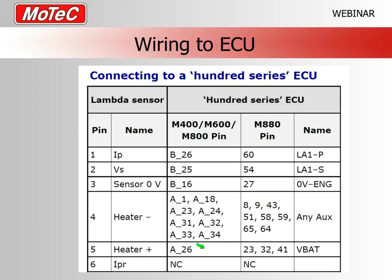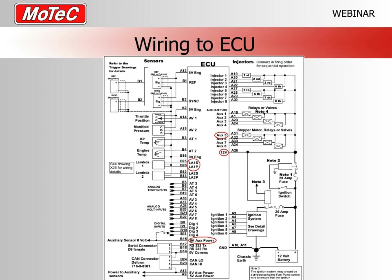A lambda sensor draws up to five or six amps when it first starts up cold. Once the engine is running with exhaust temperatures around 700°C, it'll draw less than an amp. At idle with exhaust temps of two or three hundred degrees Celsius it draws about one amp, so make sure the wiring is capable of sustaining those currents.